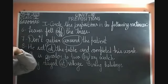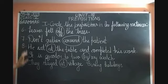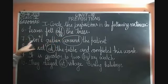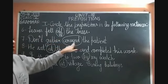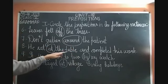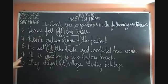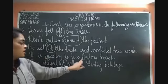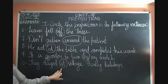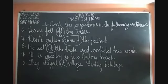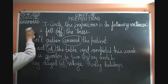With this we have finished the first exercise of Unit 18 Prepositions. To recap: sixth — 'off,' seventh — 'around,' eighth — 'at,' ninth — 'by,' tenth — 'at.' I will now erase this and start with Exercise Two.